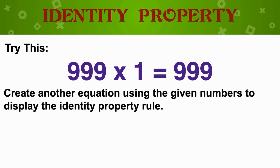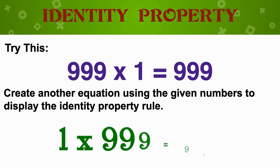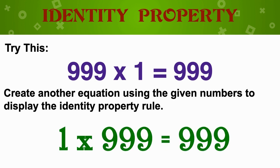Let's look at this: 999 times 1 is equal to 999. Can you think of another equation using the given numbers that will also display the identity property rule? If you said 1 times 999 is equal to 999, you are correct. The identity property — the property of 1 — means any number times 1 is always that number.